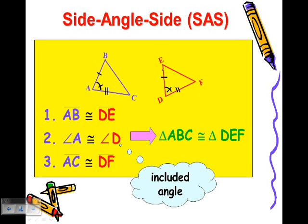So AB is congruent to DE, angle A is congruent to angle D, and AC is congruent to DF. So that angle between the two sides is congruent. If I know those three things to be true, then I know the triangles are also congruent.